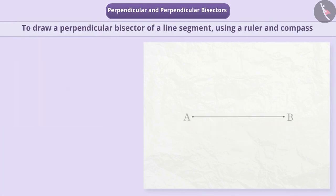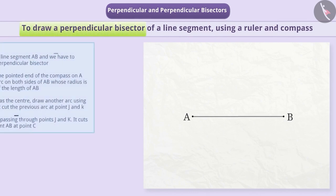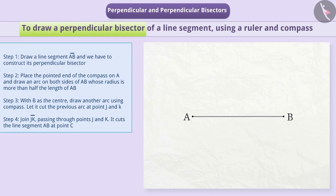Now let us understand how to draw a perpendicular bisector of a line segment. To draw a perpendicular bisector of a line segment, we will use a ruler and compass. Step 1: